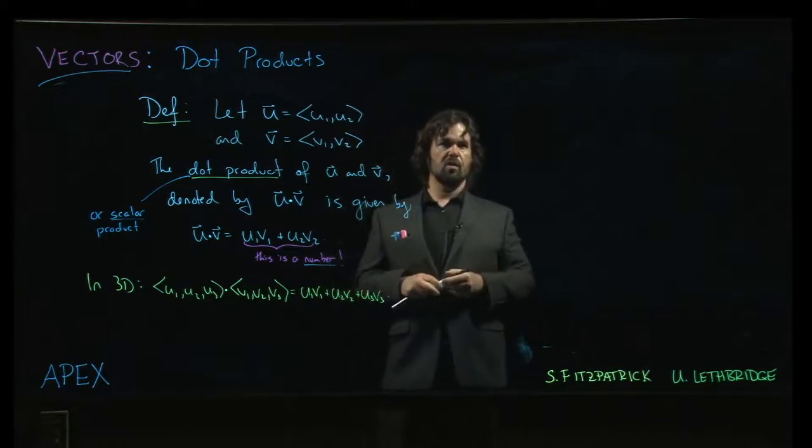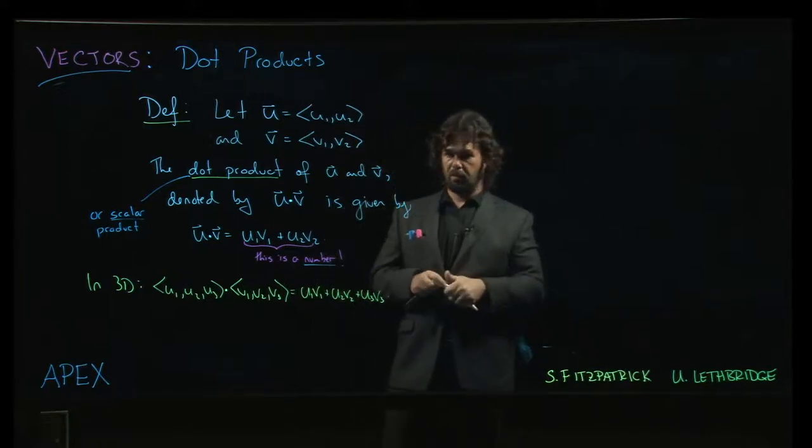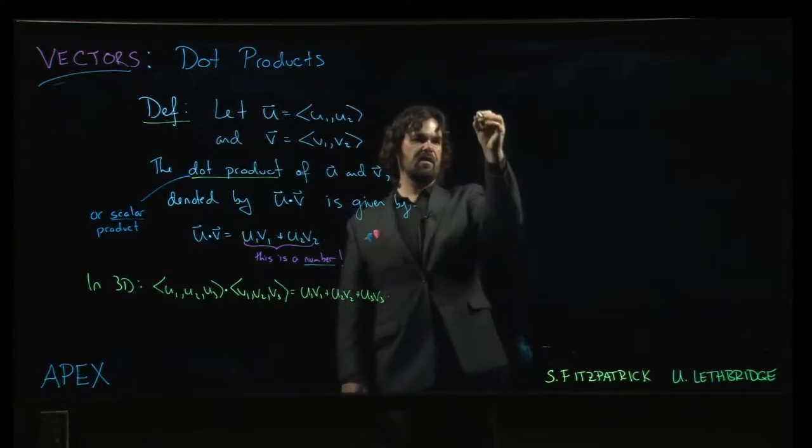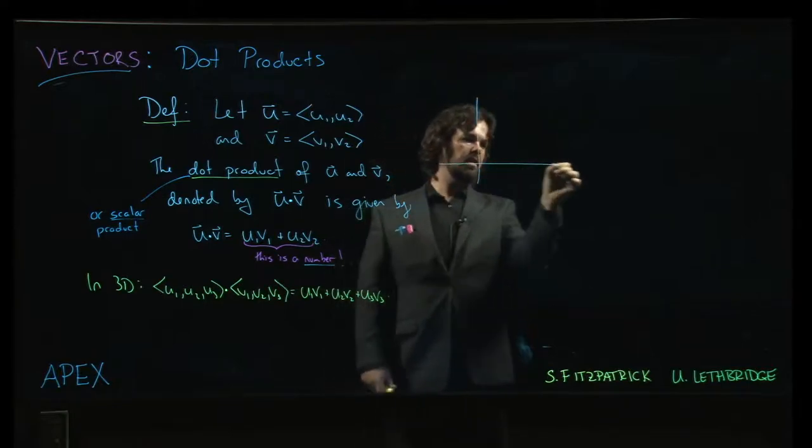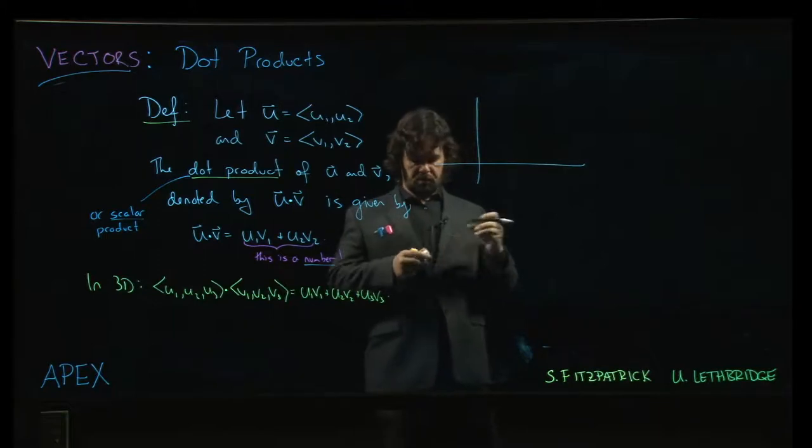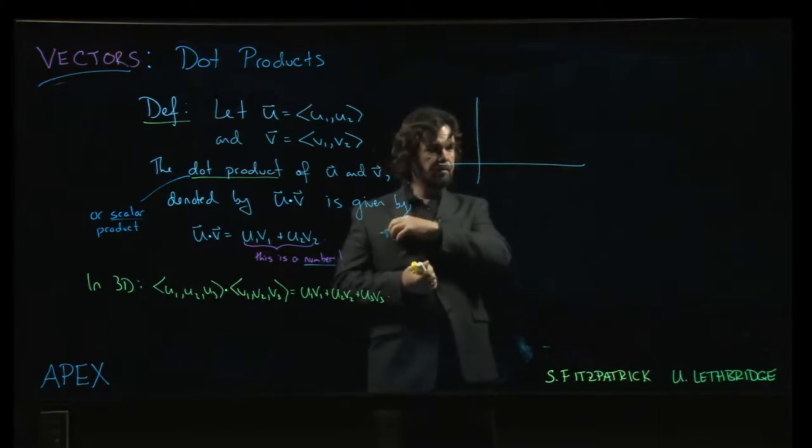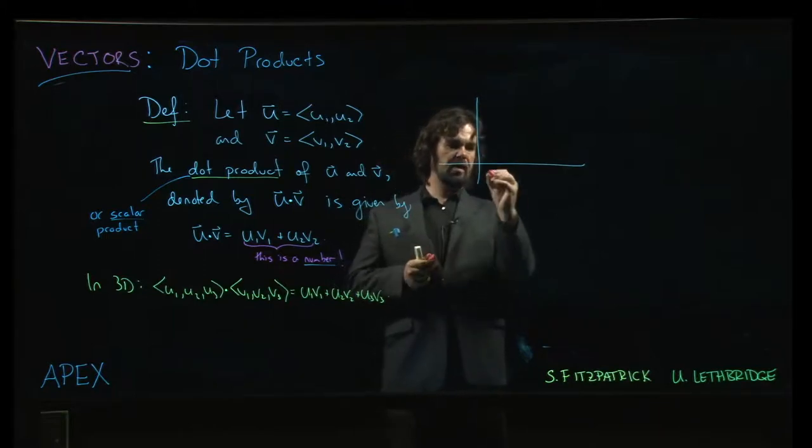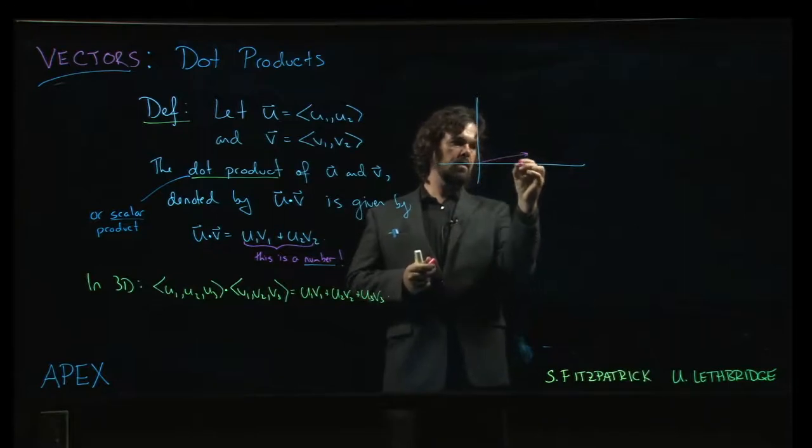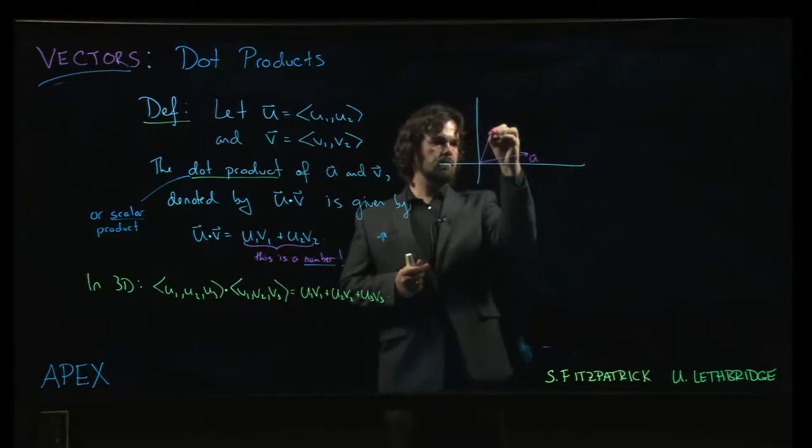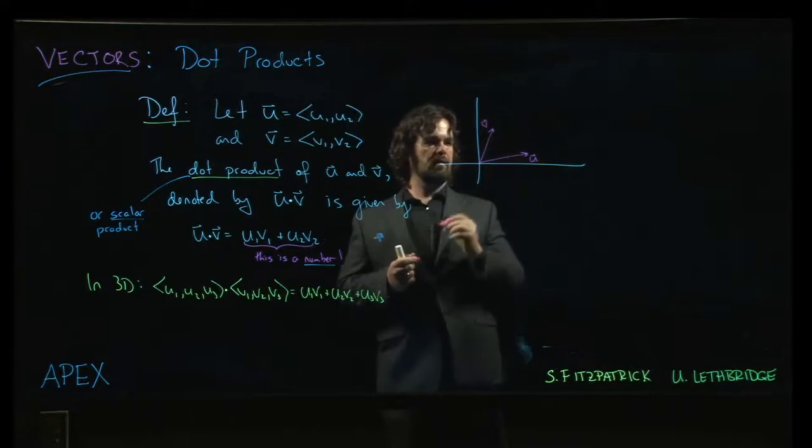And the way that you might even see the dot product defined in, let's say a physics context, is sort of much more pictorially. So you might have two vectors, say u and v.